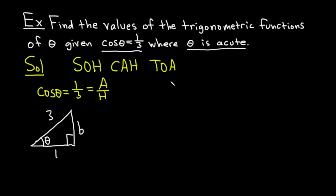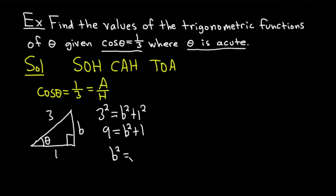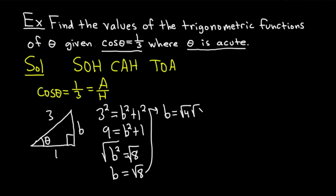Theta is acute, meaning it's in quadrant one. Now solve the triangle using the Pythagorean theorem: 3 squared equals b squared plus 1 squared, so 9 equals b squared plus 1. Subtract 1 to get b squared equals 8. Taking the square root, b equals the square root of 8. Since we want the positive answer, we simplify: the square root of 8 equals the square root of 4 times the square root of 2, which is 2 square root of 2. So we fill in the triangle with opposite side equal to 2 root 2, adjacent equal to 1, and hypotenuse equal to 3.